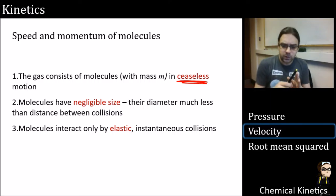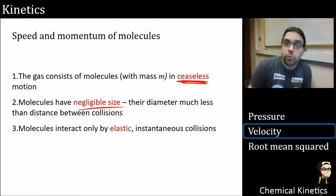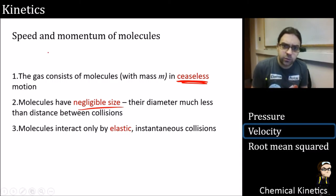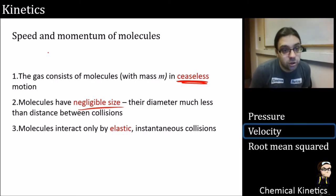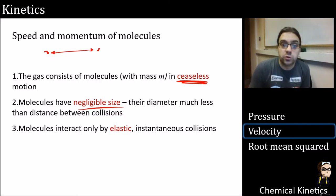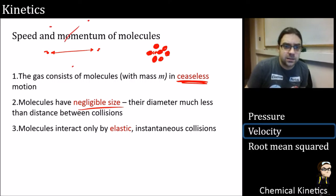We'll later cover the average distance they travel before a collision — it can be longer than you might think. We also assume that molecules have negligible size: their diameter is much less than the distance between them. This doesn't mean they are point particles in the physics sense of infinitely small. What we're saying is that their size compared to the distance between them is small — you can see they have actual extent, but the distance between them is huge. This contrasts with a liquid, where the spacing is almost on par with the molecular size.